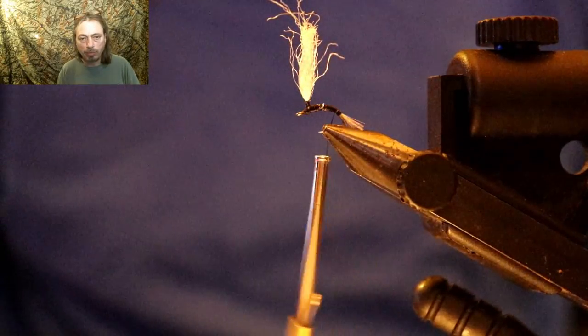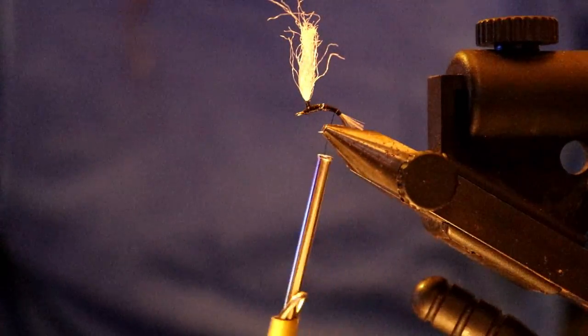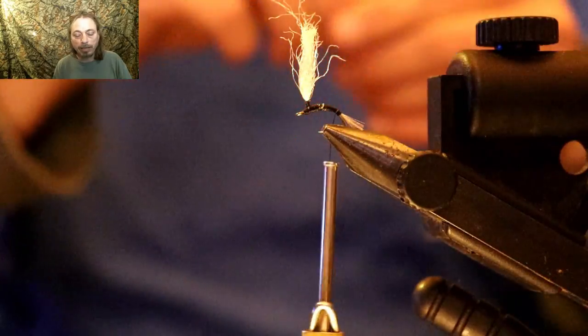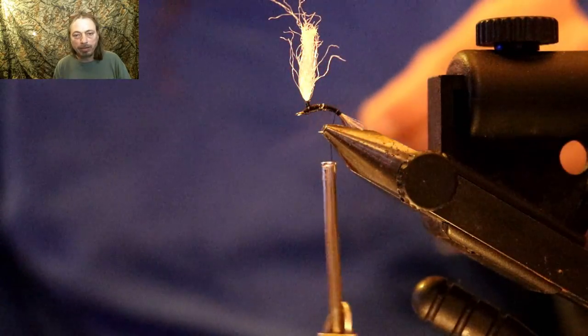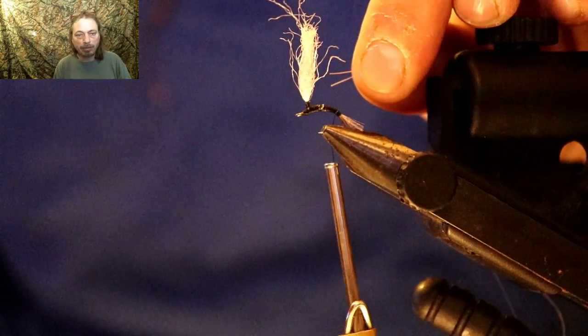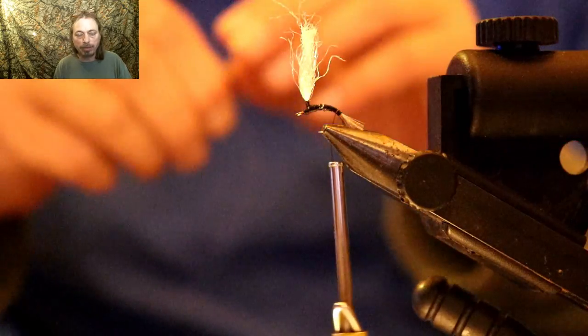You're gonna work on your taper real quick, make sure that looks all good, and run your thread back down to about the tail. Almost forgot, you gotta tie in a piece of dark brown thread. I double it up and twist together when I wrap it up. This is gonna be your ribbing.